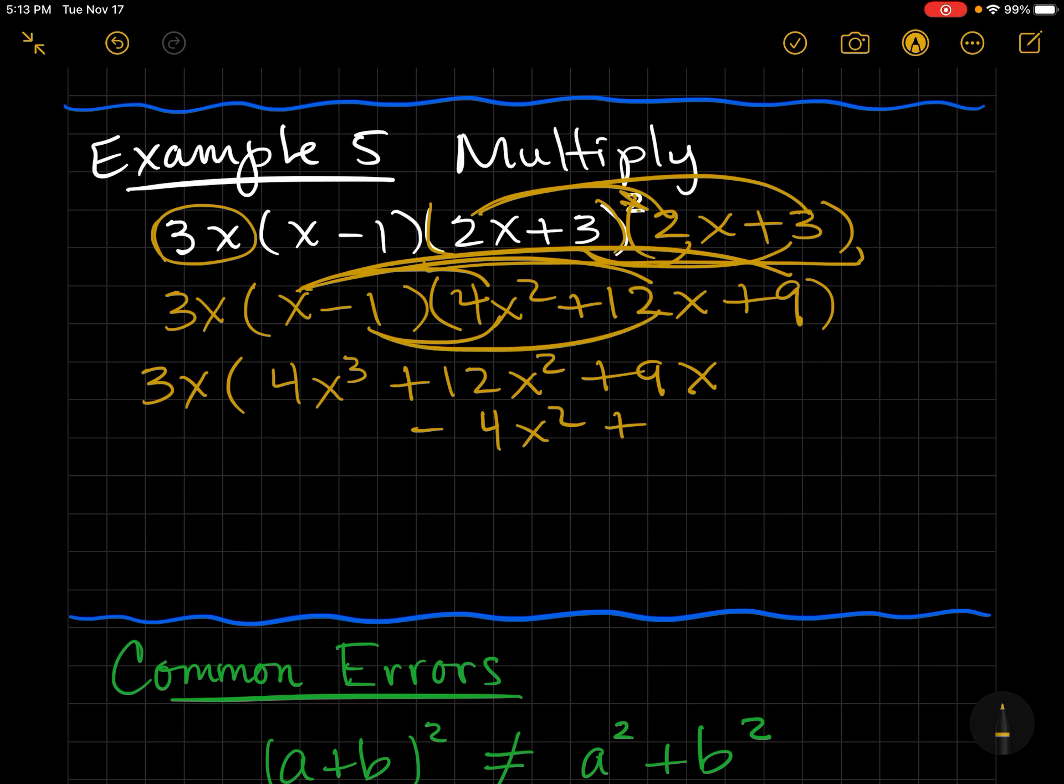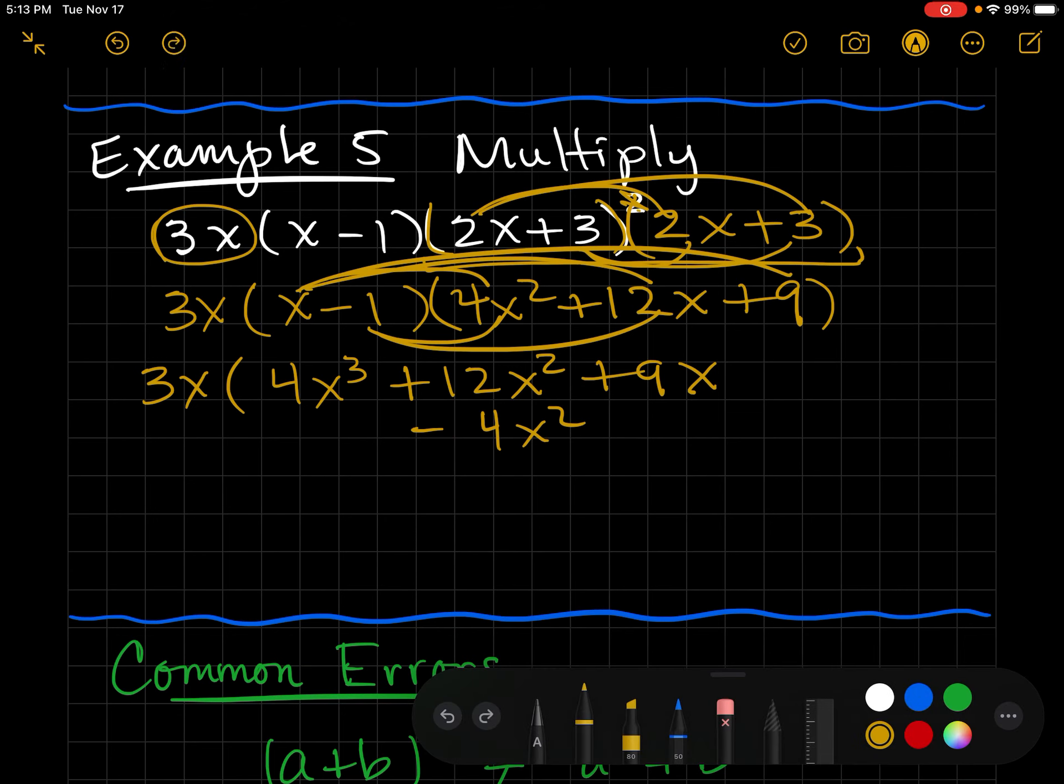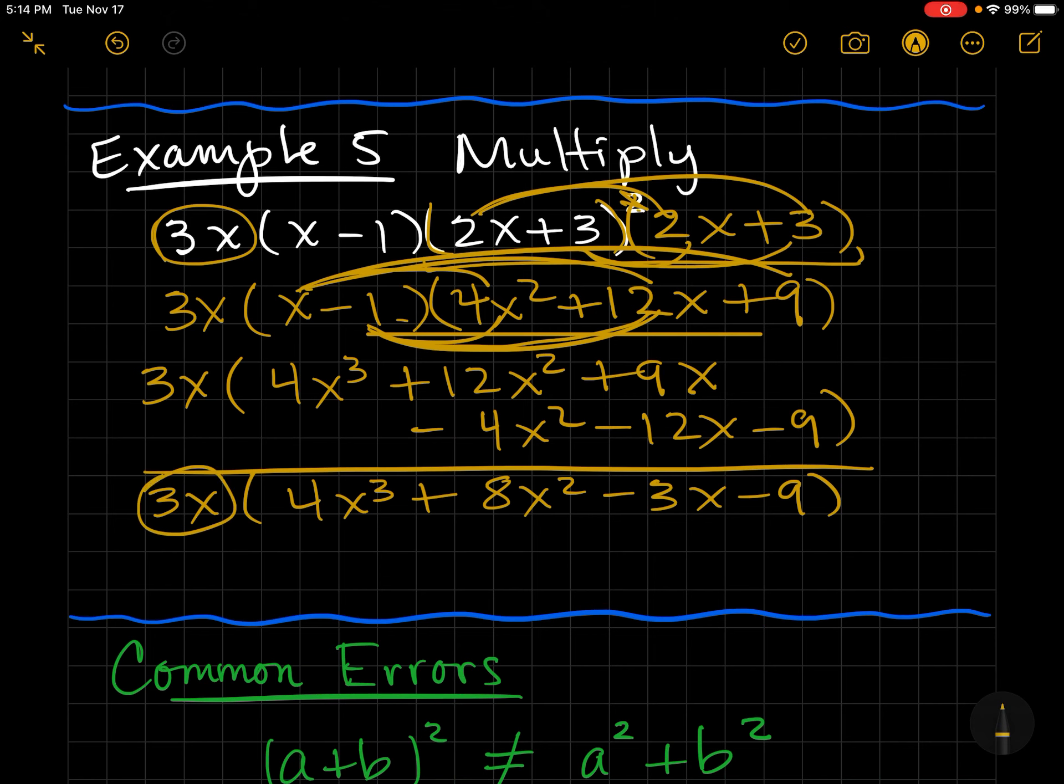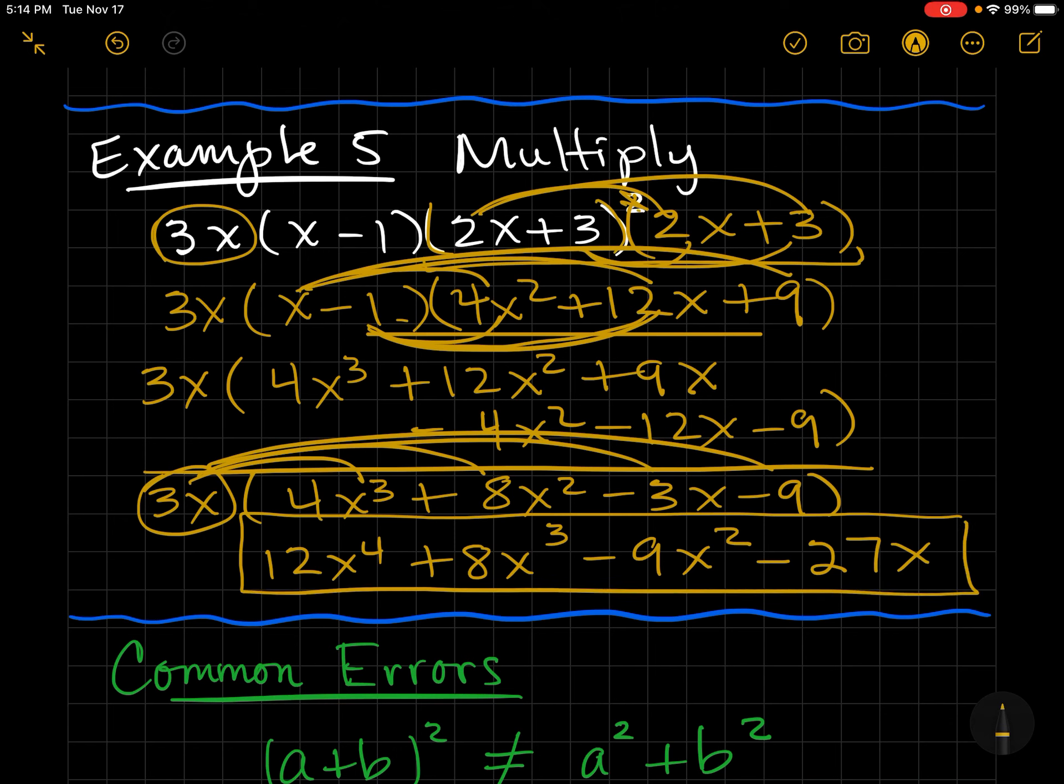And you want to be very careful like right there. I just messed up. So that should be subtraction. That's negative 12x. And then I'm looking at a negative 9. So here, the 3x is still out front. And I have 4x³ + 8x² - 3x - 9. And now I'm going to distribute the 3x to all 4 of these terms. And that gives me 12x⁴ + 8x³ - 9x² - 27x. And that is my final answer.